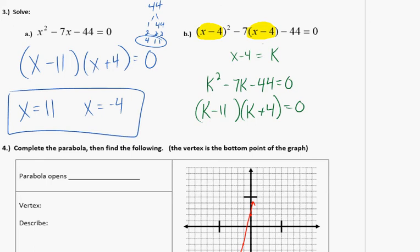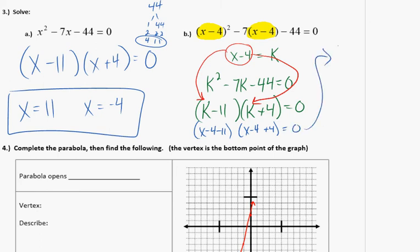Any questions on this? So this idea of chunking, if you see something like this, say, is there a way I can express this simpler? Is there a chunk that keeps appearing that I can just call it something? And if I call it something, re-express it and make this whole thing easier. All right. Last problem.